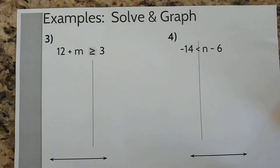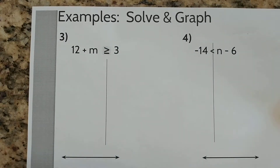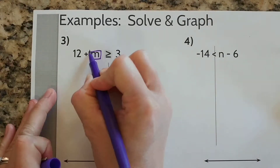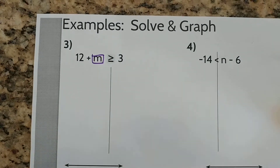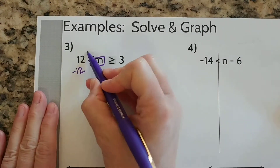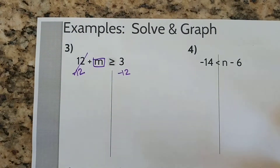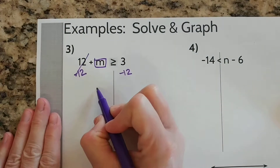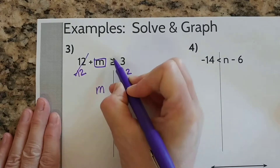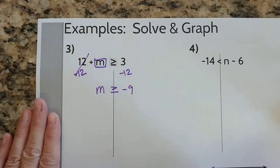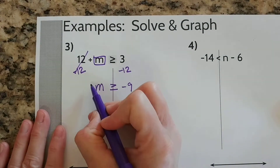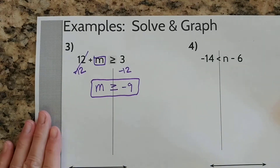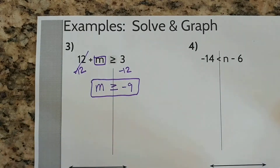On number 3, we have again an addition one-step inequality. Think about the goal — it is to get the M by itself. So how are we going to get M by itself? What do we have to do to undo the 12? Yep, minus the 12. 12 minus 12 is 0 — I can cross it off. I do the same thing to the other side. We know that if we subtract the same number from both sides of an inequality it remains true. So M is greater than or equal to — I'm just going to bring that symbol down — and 3 minus 12 is negative 9. So here are all of my solutions — M is representing any number that is greater than or equal to negative 9.